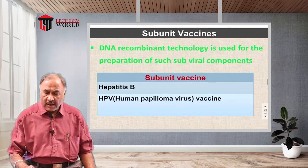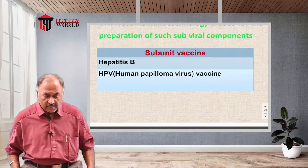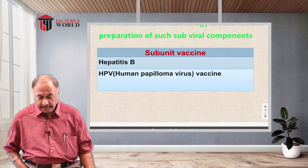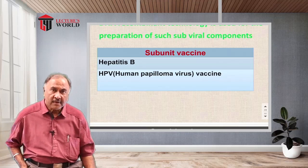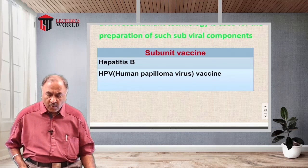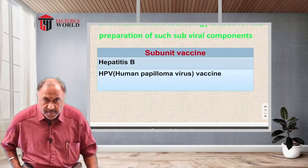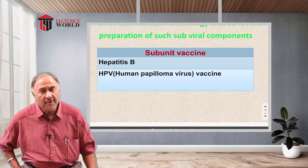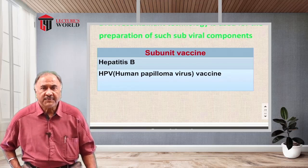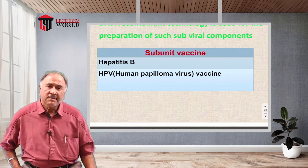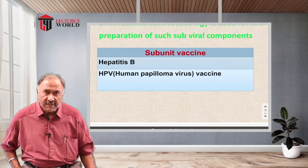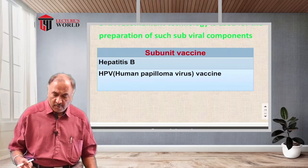This is what we call subunit vaccines. Current examples of subunit vaccines include the hepatitis B subunit vaccine and the human papillomavirus (HPV) vaccine, which protects against certain diseases caused by papillomavirus in females.